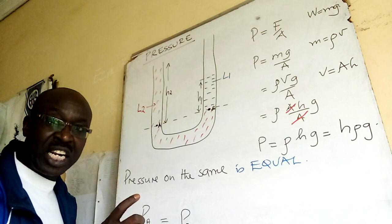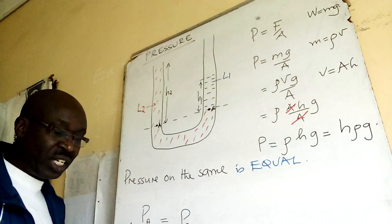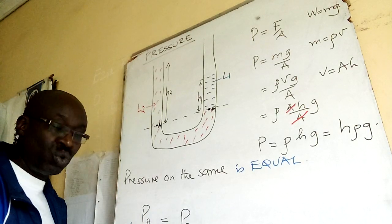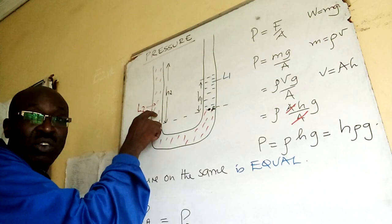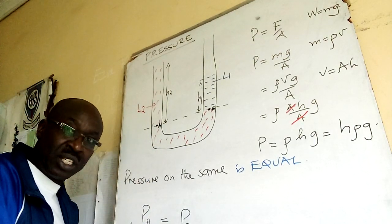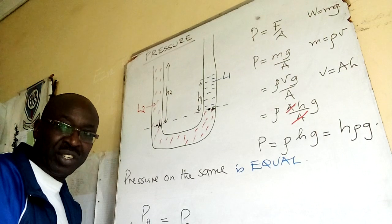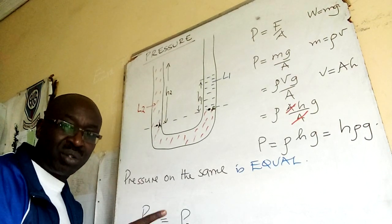Then substitute. Our pressure deals with height. So you write height on the left hand is H2. The density of this liquid I'm dealing with is ρ2, multiply by gravity. You don't need 2. Gravity is the same.